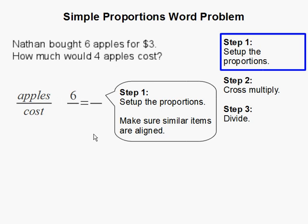Make sure I'm consistent with this. The same thing applies for the next set of values. The four goes on top for apples, and how much do four apples cost? We don't know, so I'm going to put an X in for the cost.